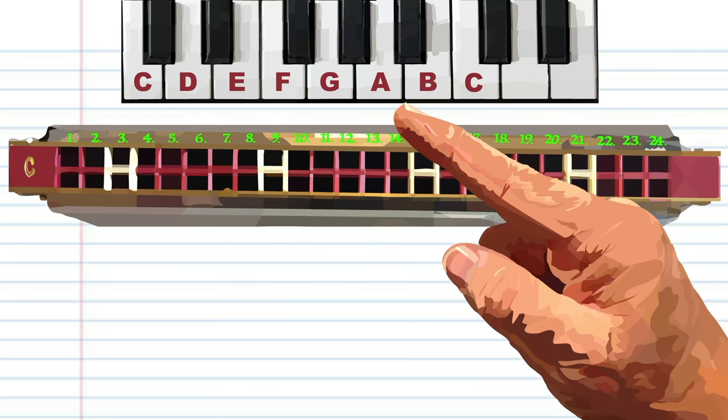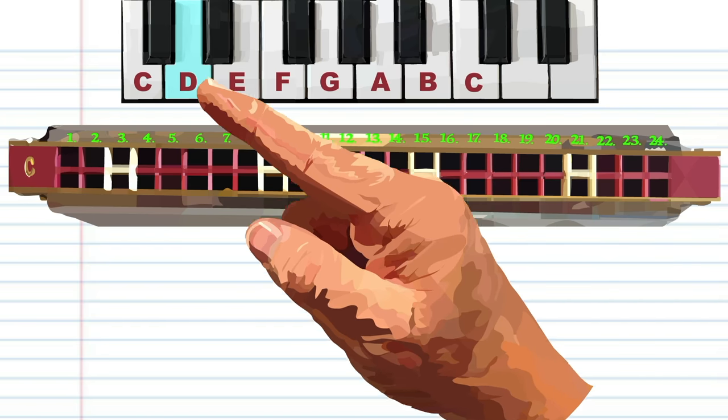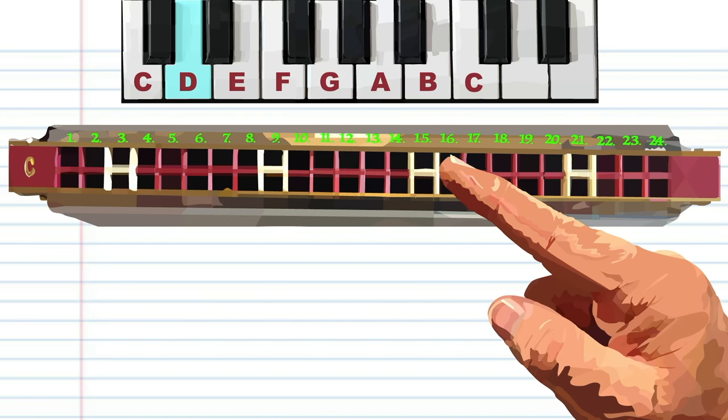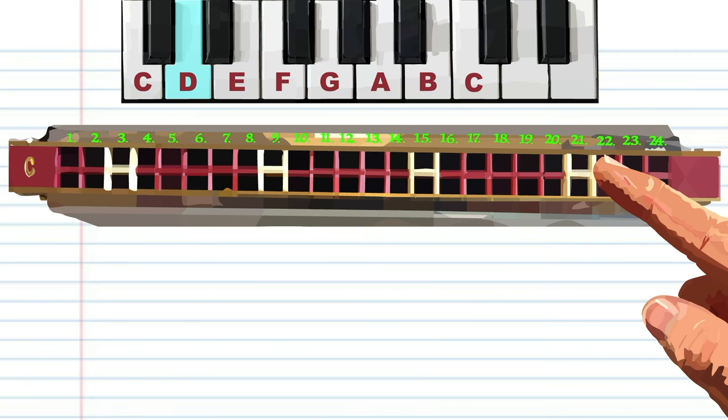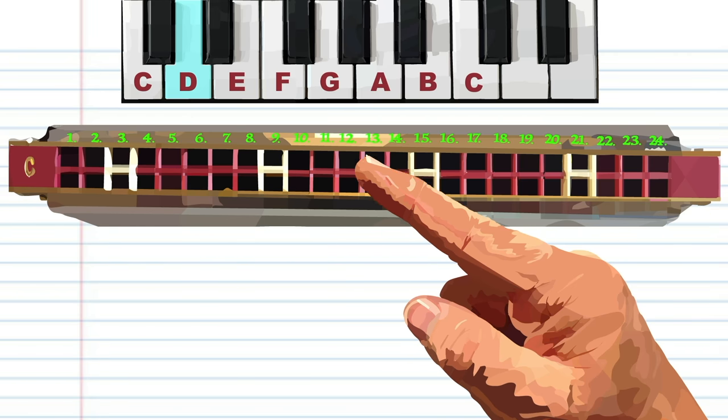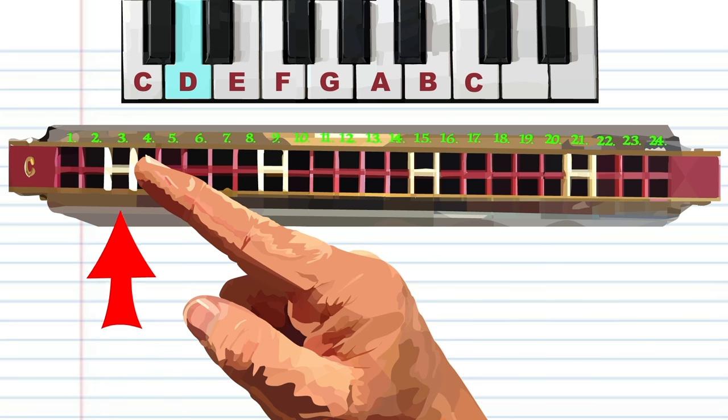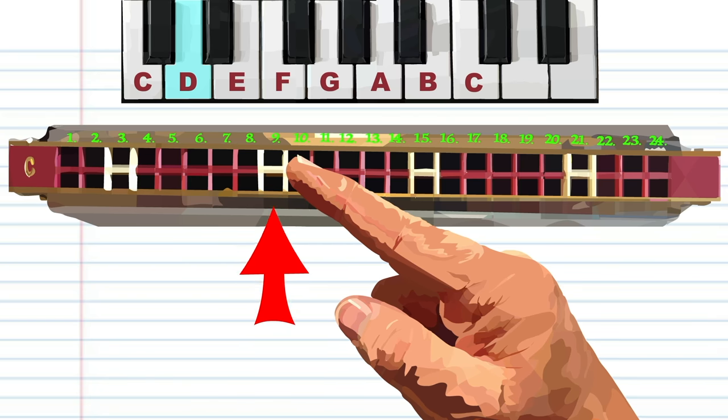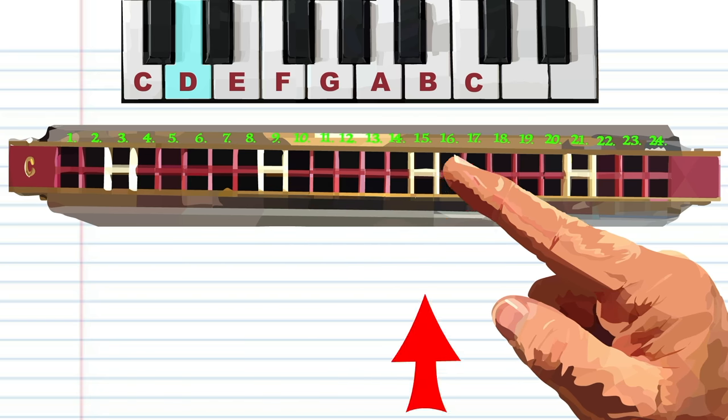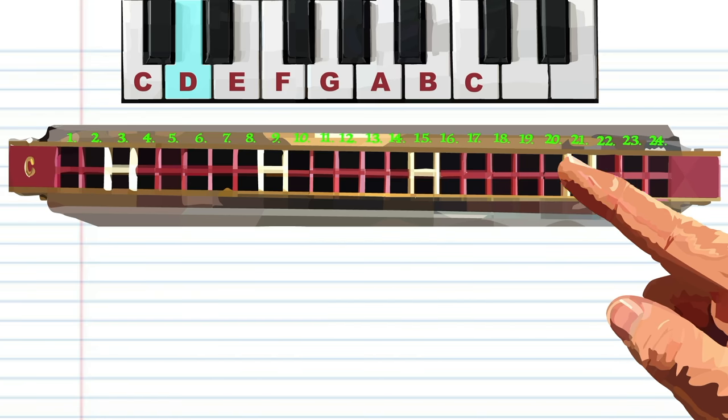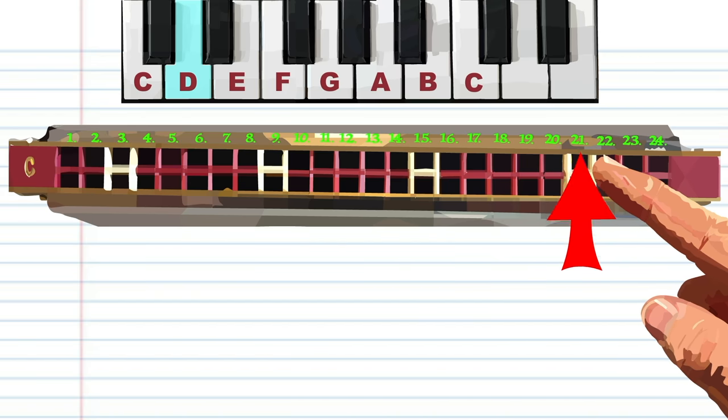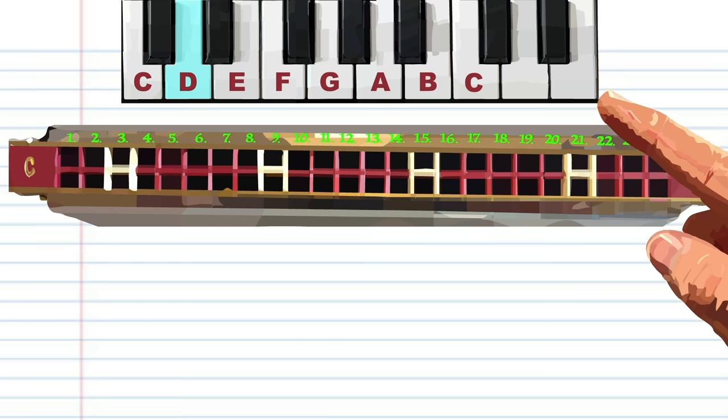Likewise, if your tremolo is in the key of D major, the holes 3, 9, 15, and 21 will all make the D sound, and so on.